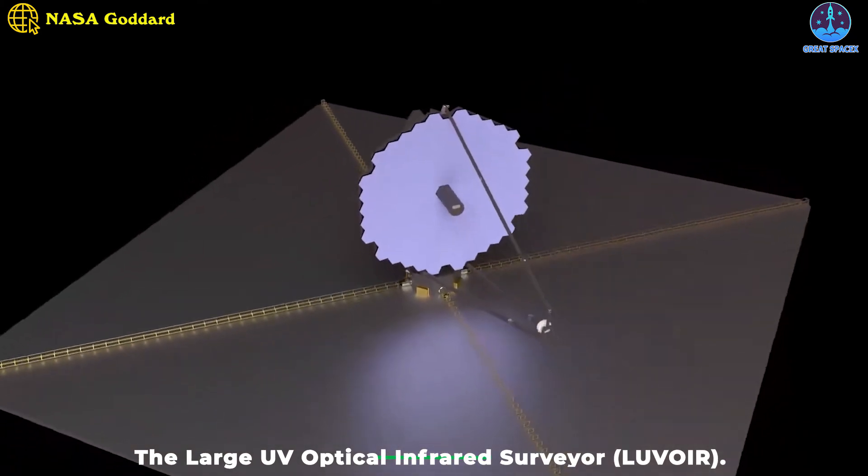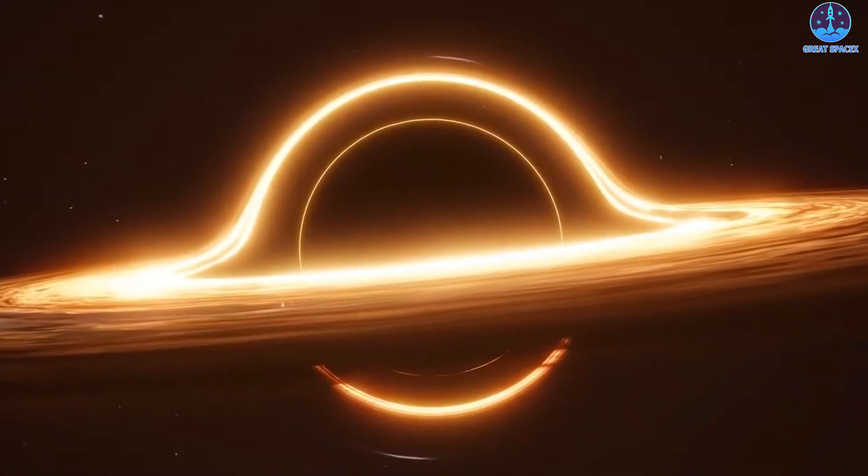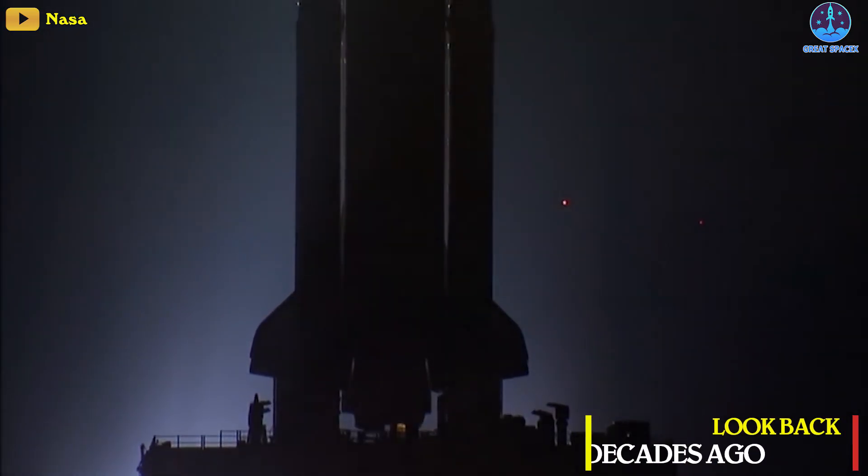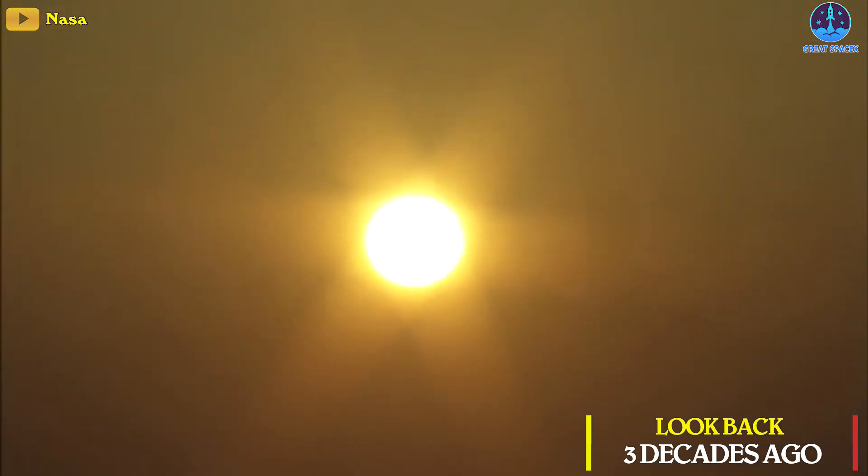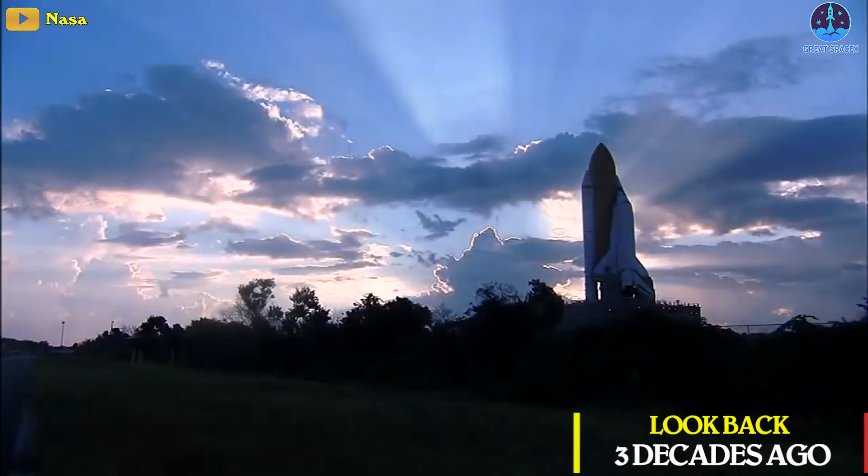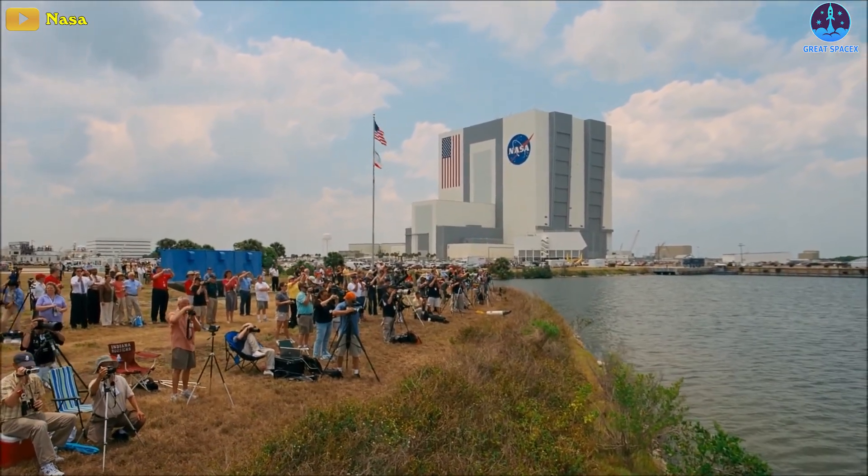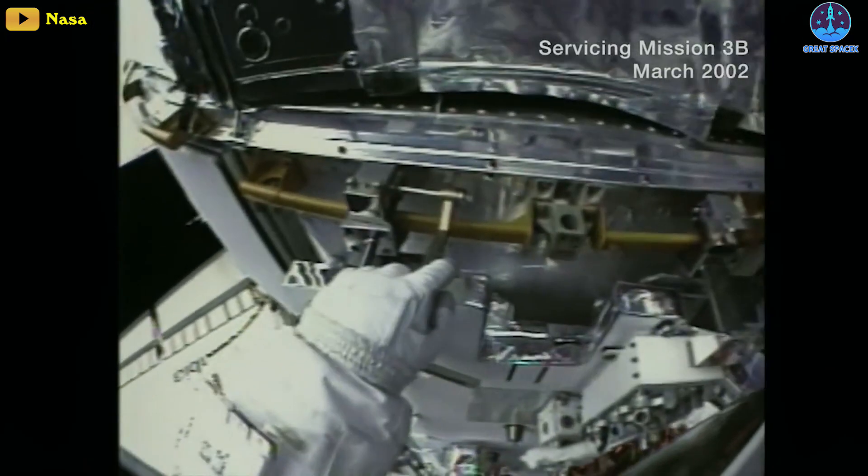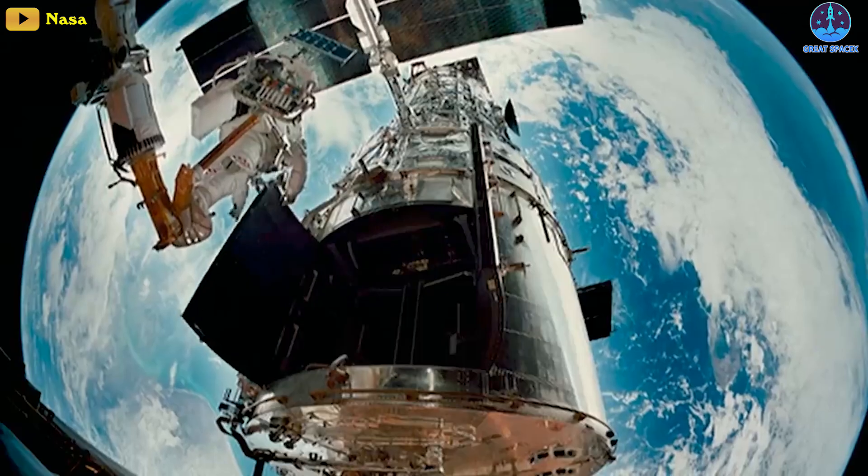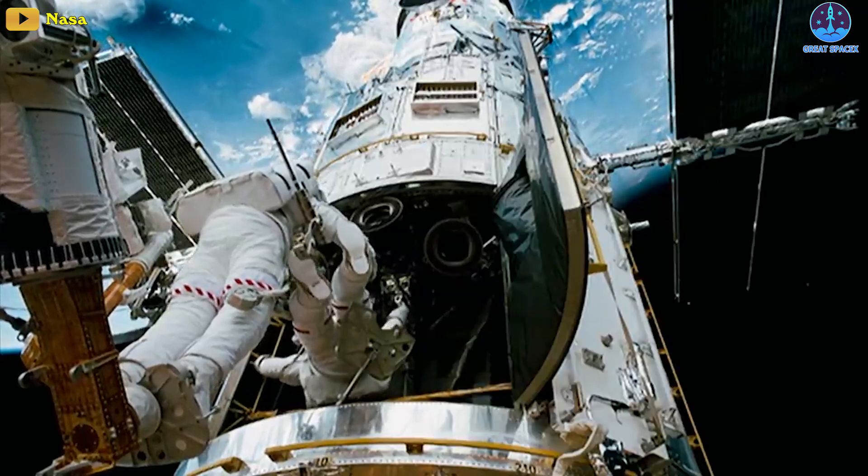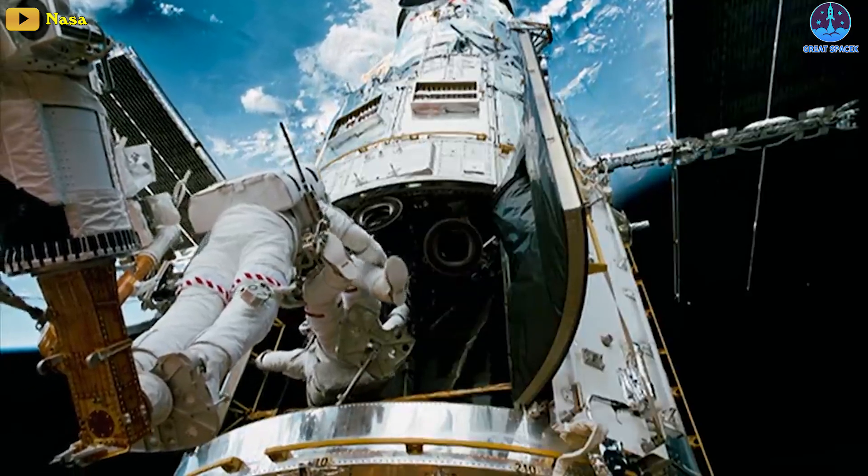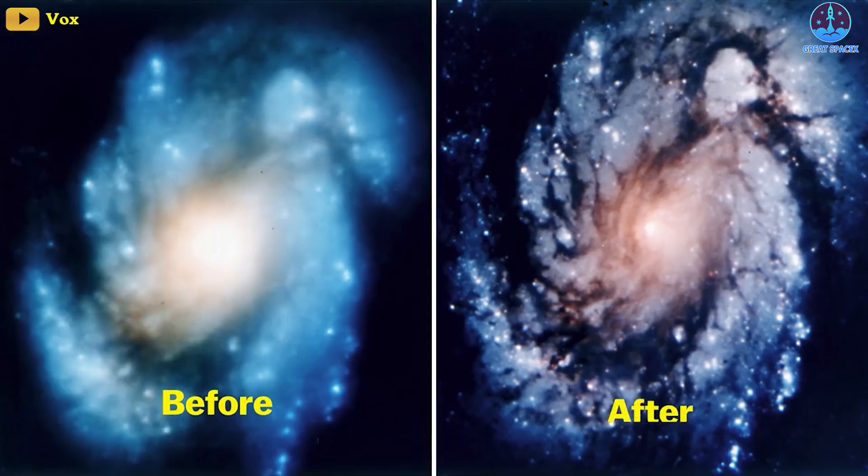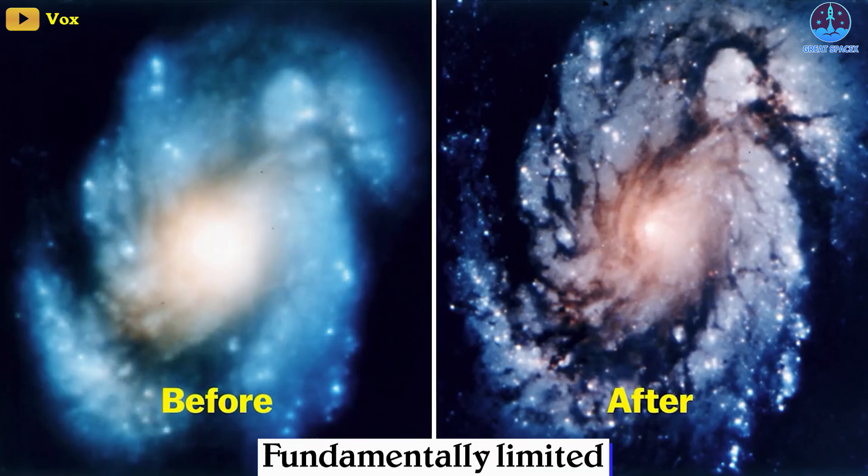It's called the Large UV Optical Infrared Surveyor, or LUVOIR. Now what are we waiting for? Let's begin by taking a look three decades ago to better understand how people step by step wrapped their minds around the mystique of space. NASA's Hubble, for the past 32 years, has truly showcased what a cutting-edge space-based observatory is capable of.